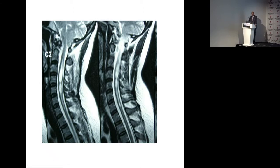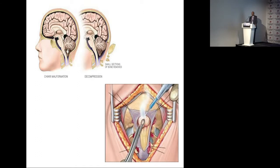So my question is: when there is Chiari and syrinx with bone malformation, and when there is Chiari and syrinx without bone malformation, are these completely different problems — as the literature says? I am absolutely clear about it: they are one and the same problem.